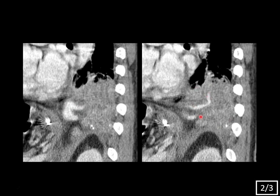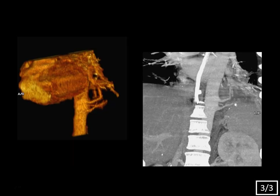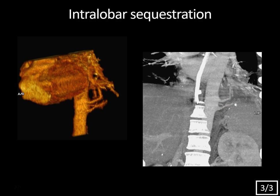We see that consolidation there at the left lung base. The 3D volume rendered image shows more nicely the anomalous arterial supply arising directly from that descending thoracic upper abdominal aorta to supply this left lower lobe consolidation. There again is that anomalous arterial systemic blood supply. So these findings are very specific for intralobar sequestration.